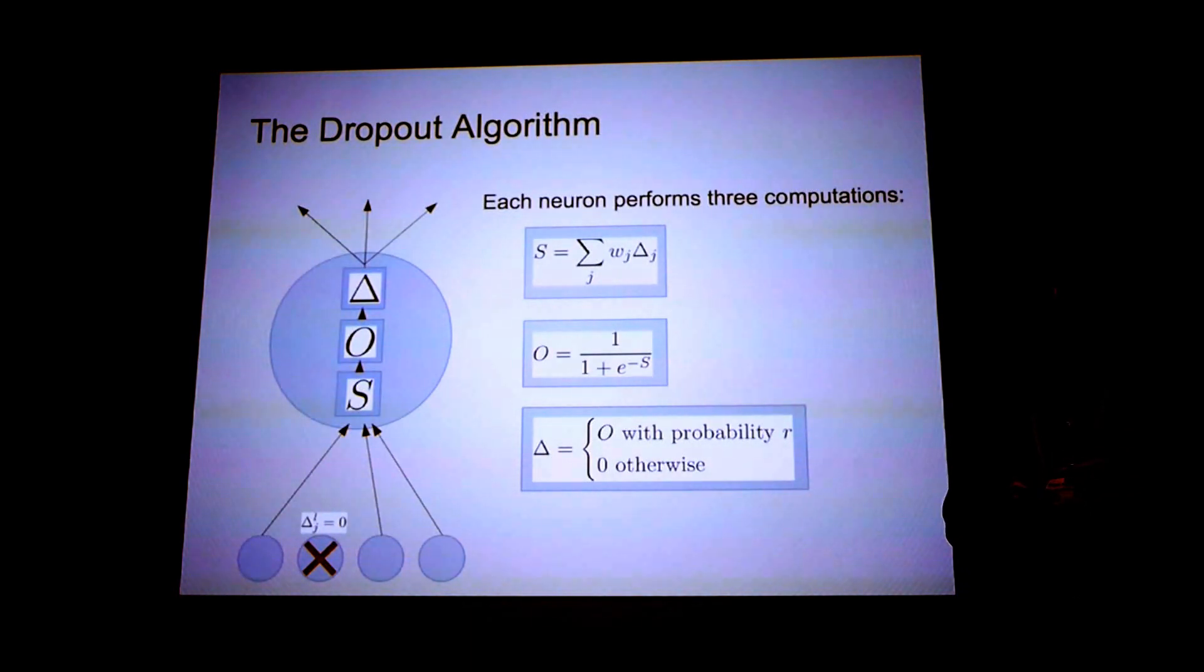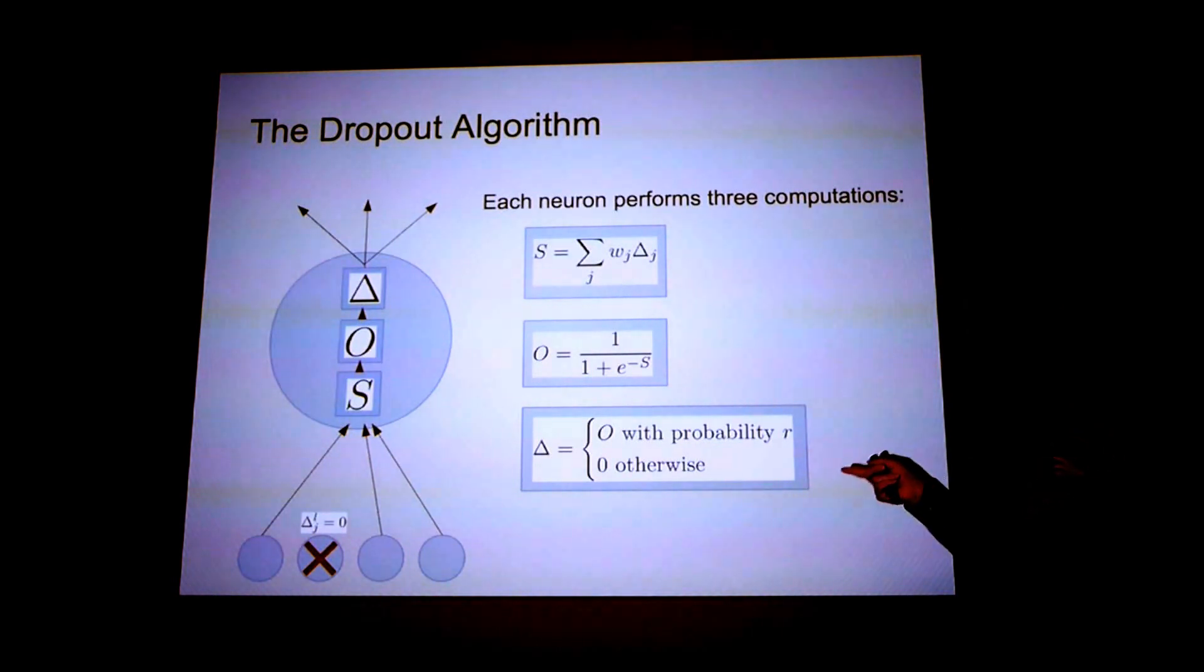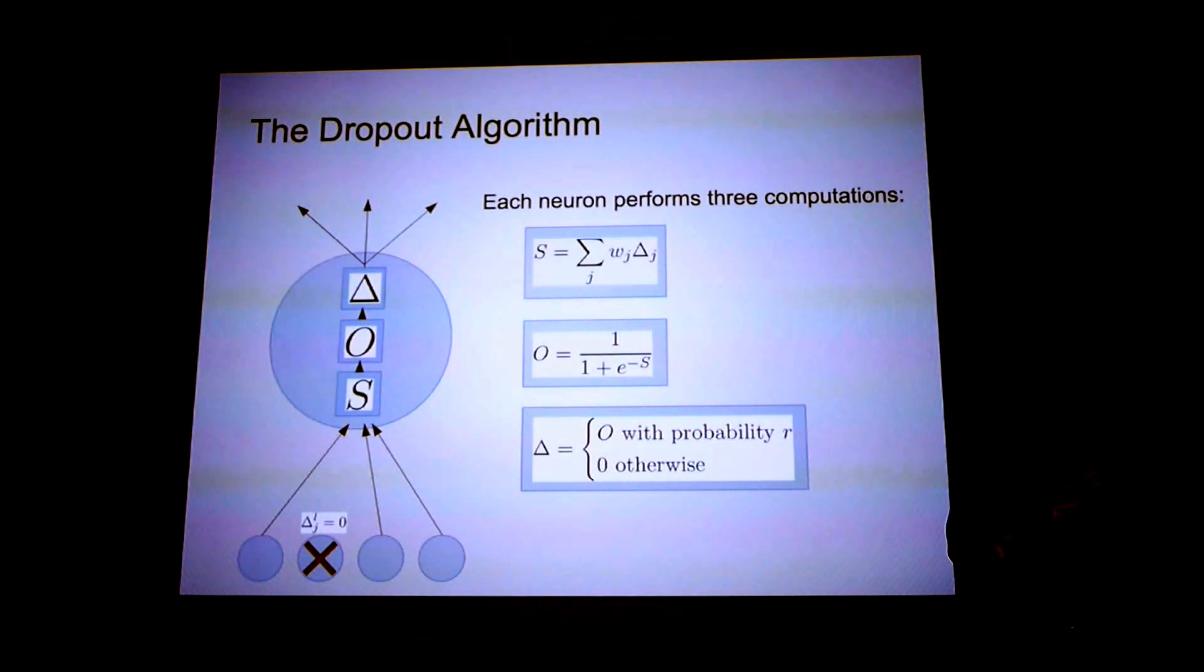And the final computation is stochastic. So delta is the value this neuron is sending to the neurons in the next layer. And in dropout, delta is O with probability R and 0 with probability 1 minus R. So this is the formalism that we're going to use to understand our other variants of dropout.